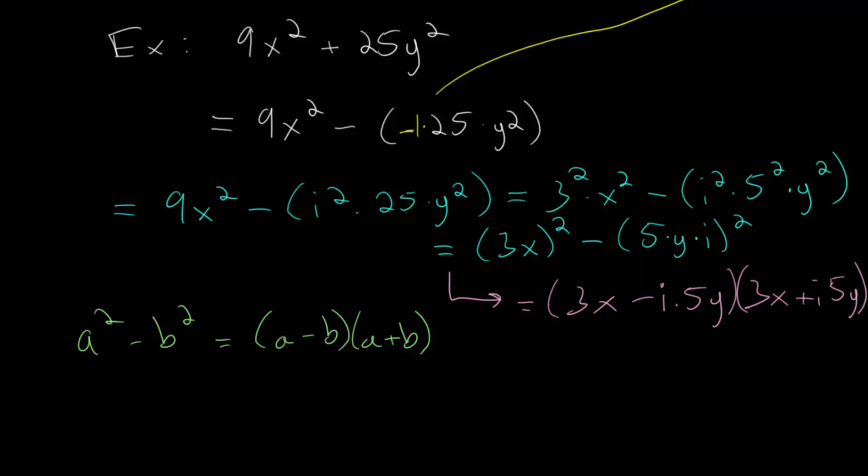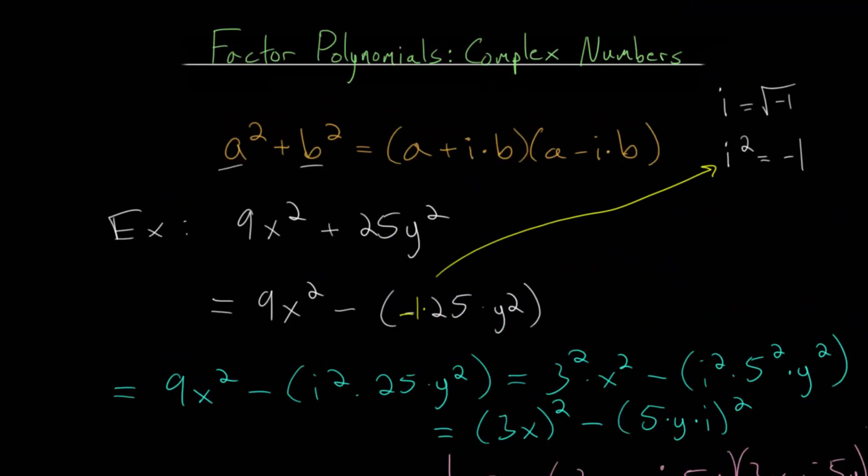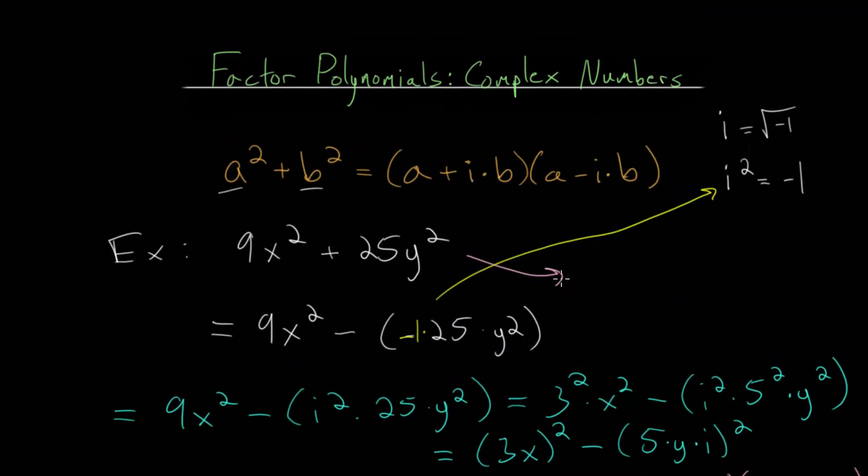So this is how you would factor it from basic principles, just rewriting your sum as subtracting a negative, and then replacing that negative on the inside here with i squared. And like I mentioned, we could have just started with the formula. So let's look at that as an alternate way to approach this.